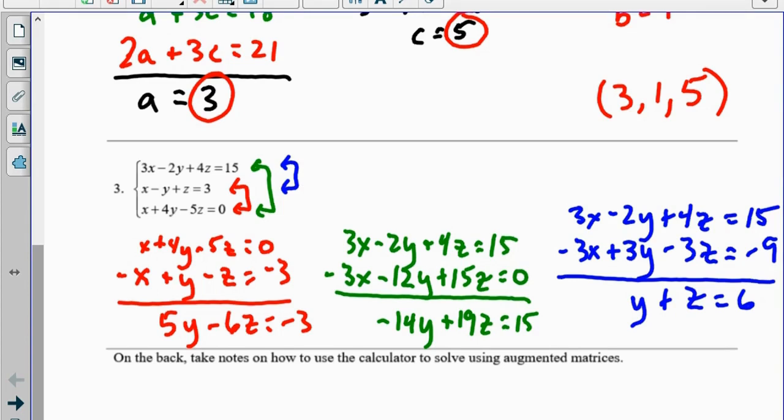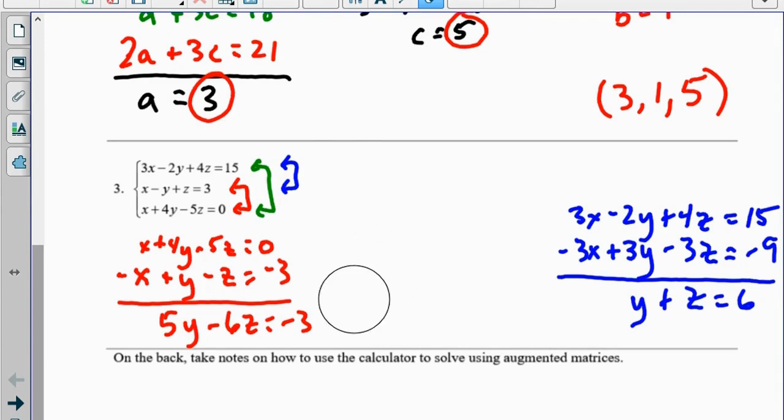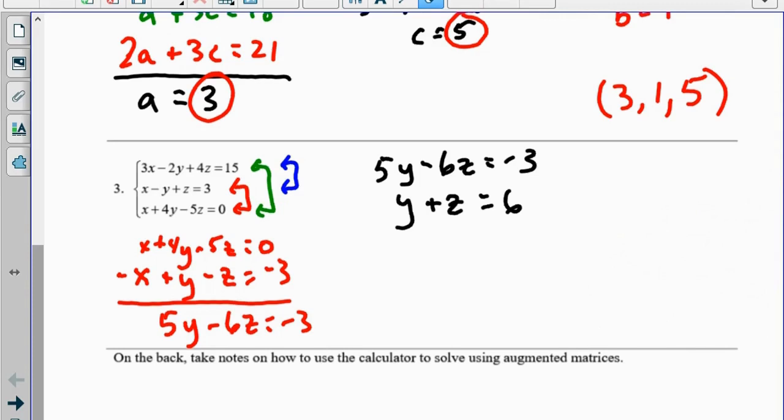What I'm going to do now is I'm going to take the red and the blue equations and do a solving problem, because I looked at the green one and I don't really want to deal with the 14 and the 19 and all that other stuff. So what I have here is I'm going to take 5y minus 6z equals negative 3 and y plus z equals 6, and I'm going to do a little solving.